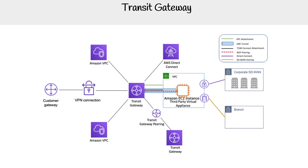Looking at the diagram — imagine you have a transit gateway and you're able to connect multiple VPCs so they can talk to each other. The great advantage is that it's a hub-and-spoke model, so you can connect as many VPCs as you want and they communicate through the gateway. You can obviously connect it with Direct Connect as shown, and you can use transit gateway peering to peer with another transit gateway.